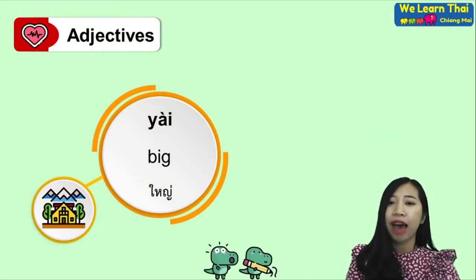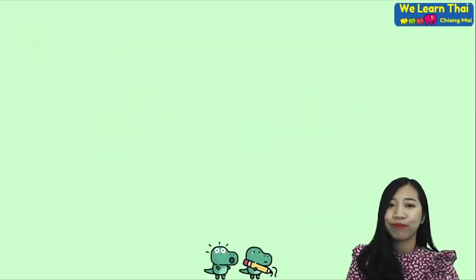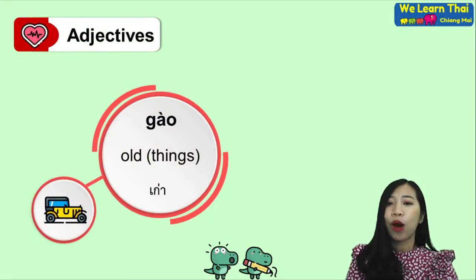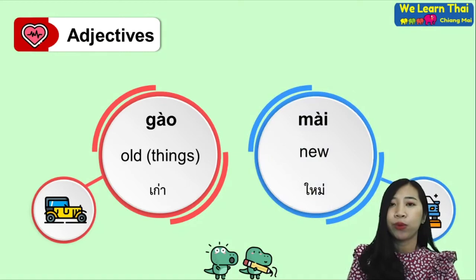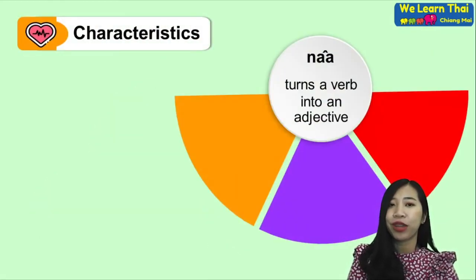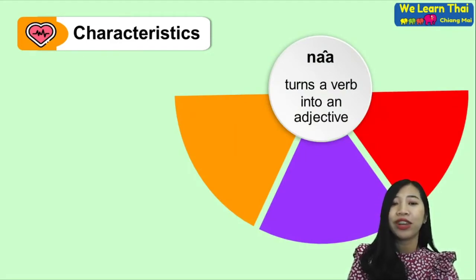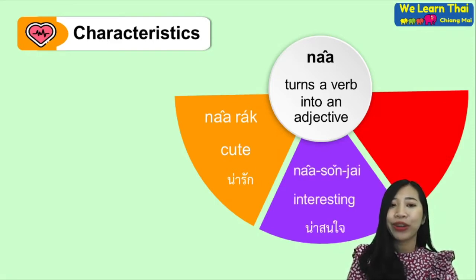For adjectives, we have the word 'yai' which means big, and 'lek' which means small. We also have 'เตี้ย' (tia) which means short or low. Then 'นารัก' (na rak) which means cute, and 'นาสนใจ' (na son jai) which means interesting.